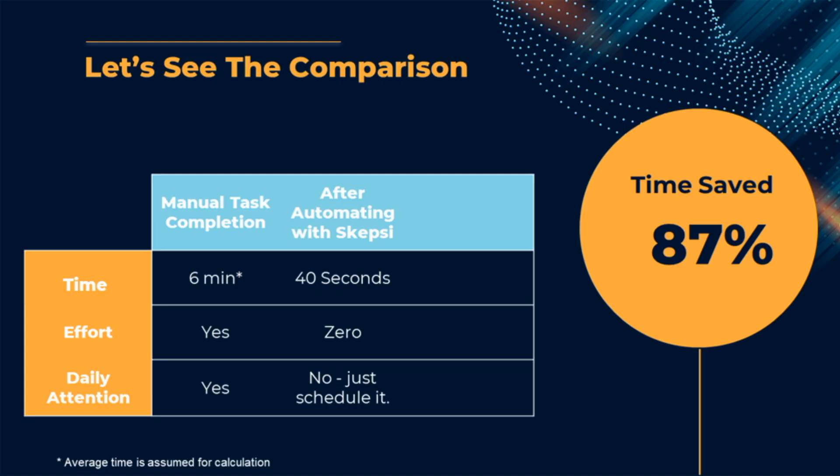Let's compare the results after doing the task manually and after automating it with Skepsi. When done manually, it takes 6 minutes on average, but with Skepsi it took only 40 seconds. In manual task completion you have to put in effort, while with Skepsi, because it is automated, there is zero effort. Also, while doing manually you have to sit daily and perform the task. While with Skepsi, you can schedule it on a daily frequency and it will run automatically — just schedule it and forget it.